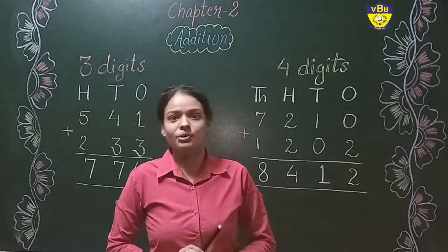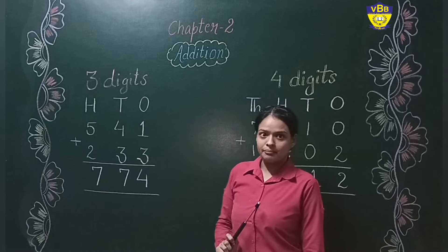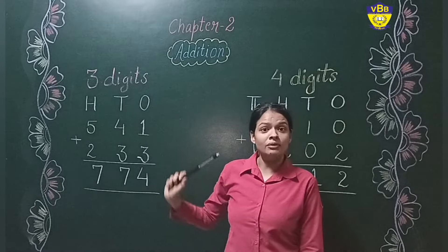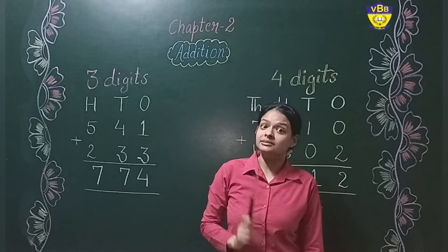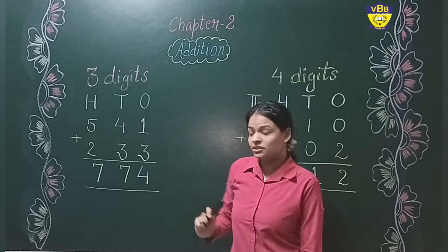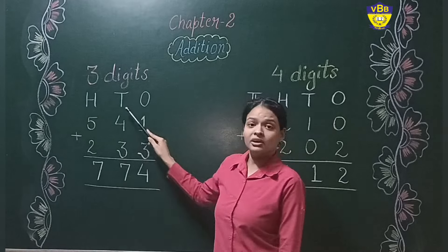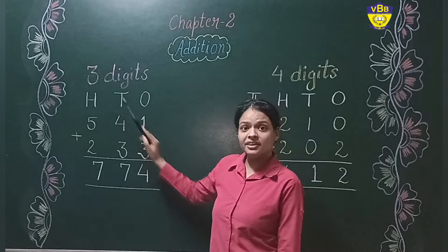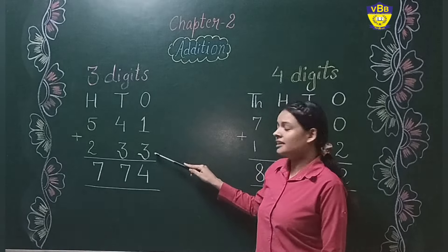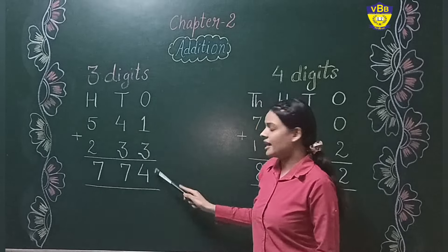Now I will explain it to you with the help of an example. As you have seen, I have written three-digit numbers here and four-digit numbers here. In our previous class we studied about three-digit numbers, and as you know it is very necessary to write them correctly. So I have taken one and three on the ones place, and four and three on the tens place, and on the hundreds place we have five and two. So one plus three — we will open one finger and count after three — it will be four. So I have written four.